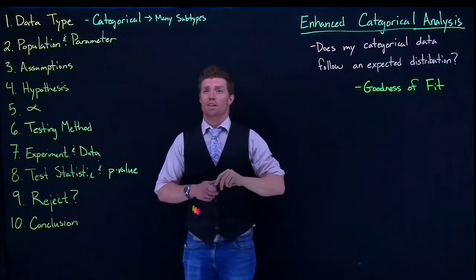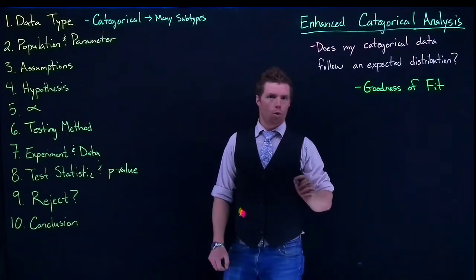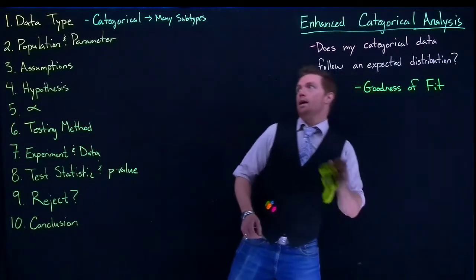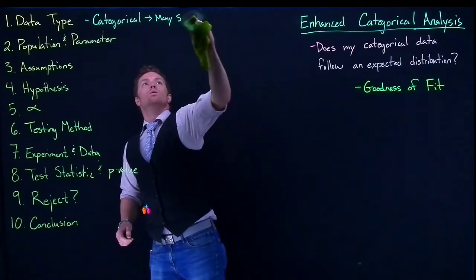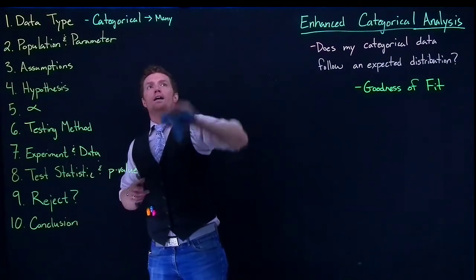Or in other words, like we have categorical data where we might have red, yellow, blue, green, and orange as possible outcomes. So maybe instead of subtypes, we'll call this as outcomes.